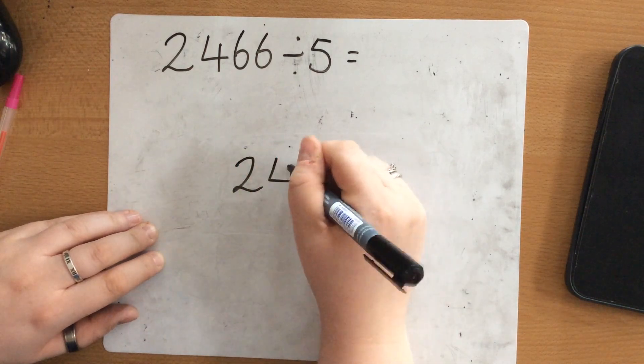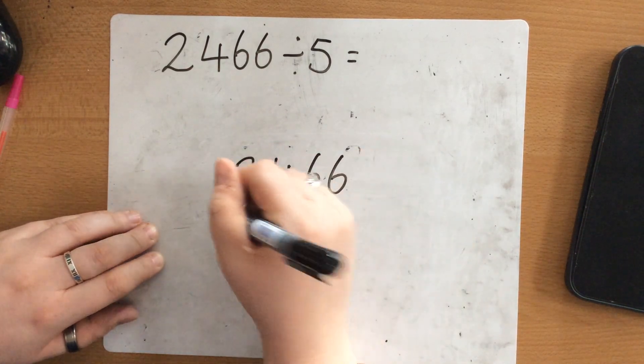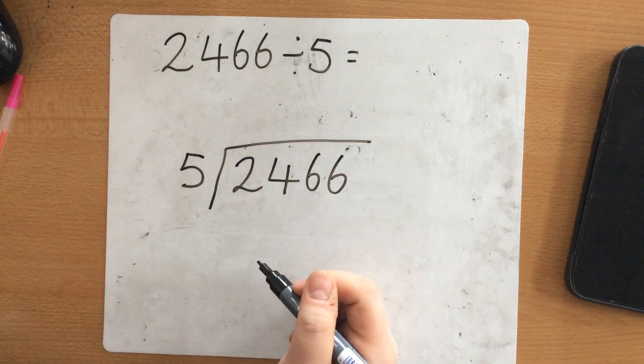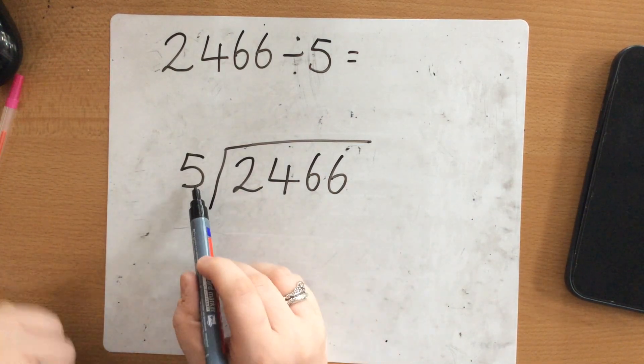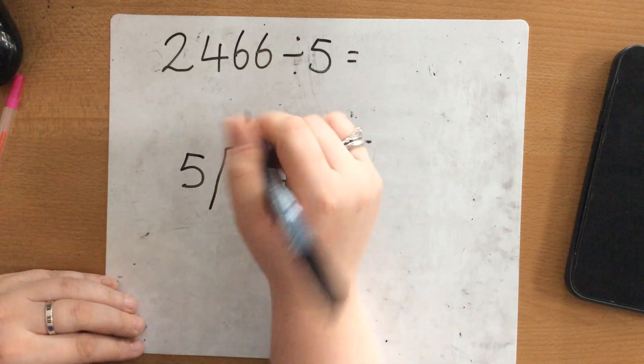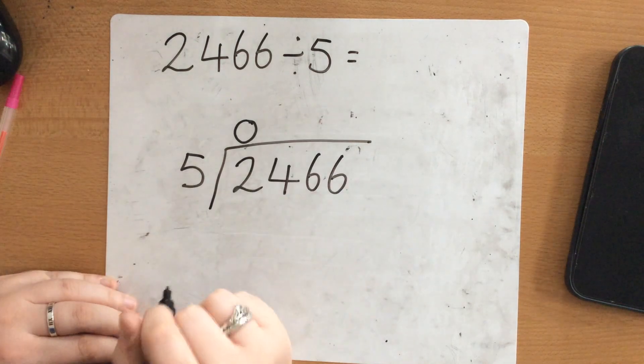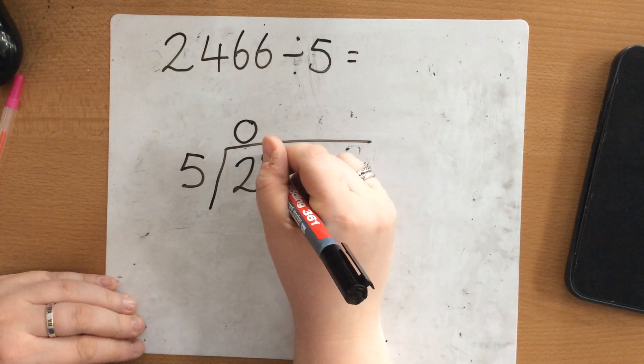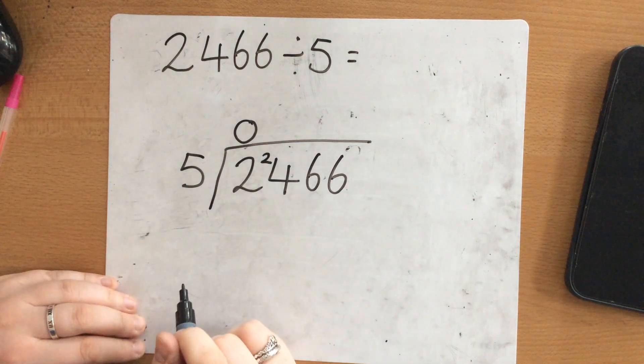2,466 divided by 5. Now if I'm counting in my 5 times tables I can't get to 2. So 5 goes into 2 0 times and I still have these 2 left over which will be carried across to the next number.